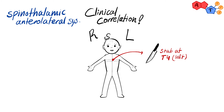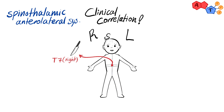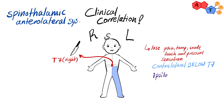For a clinical correlation: if a person has an injury to the left side of the spinal cord at the level of T4, they will lose pain, temperature, crude touch, and pressure sensations on the right side of all body parts below T4. They will also lose all sensations from the left side of the body at the same level of T4, because the injury may affect the dorsal root ganglia or dorsal horn on the left side. Similarly, injury to the right part at T7 results in contralateral loss of those sensations below T7, and ipsilateral loss of all sensations at the same side of T7.